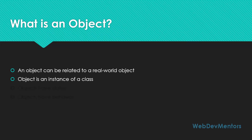Objects have states. States can be a color, a name, or something that is related to an object that you create. So if it is a car that you are taking as an object, it can be the color of the car, the make of the car, the model of the car, or the number of the car.